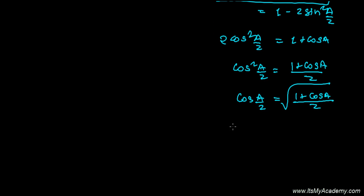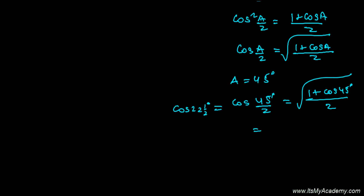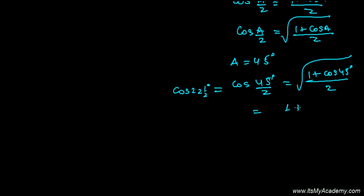So what happened my dear friend, if A equals 45 degrees, it will be cosine squared of 45 degrees divided by 2, which is also known as cosine 22 and a half degrees, will be now 1 plus cosine of 45 degrees divided by 2 inside the root.